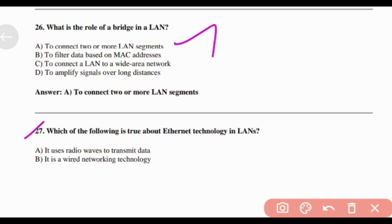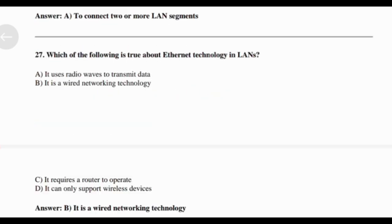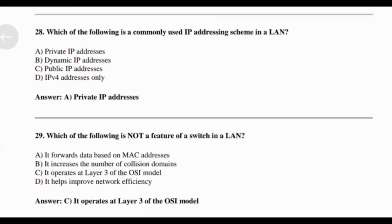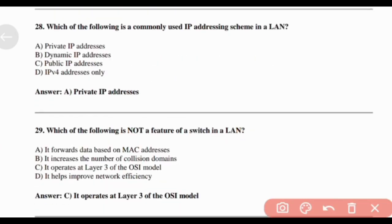Which of the following is true about Ethernet technology in LANs? Answer: Option B — It is a wired networking technology. Which of the following is a commonly used IP addressing scheme in a LAN? Answer: Option A — Private IP addresses.